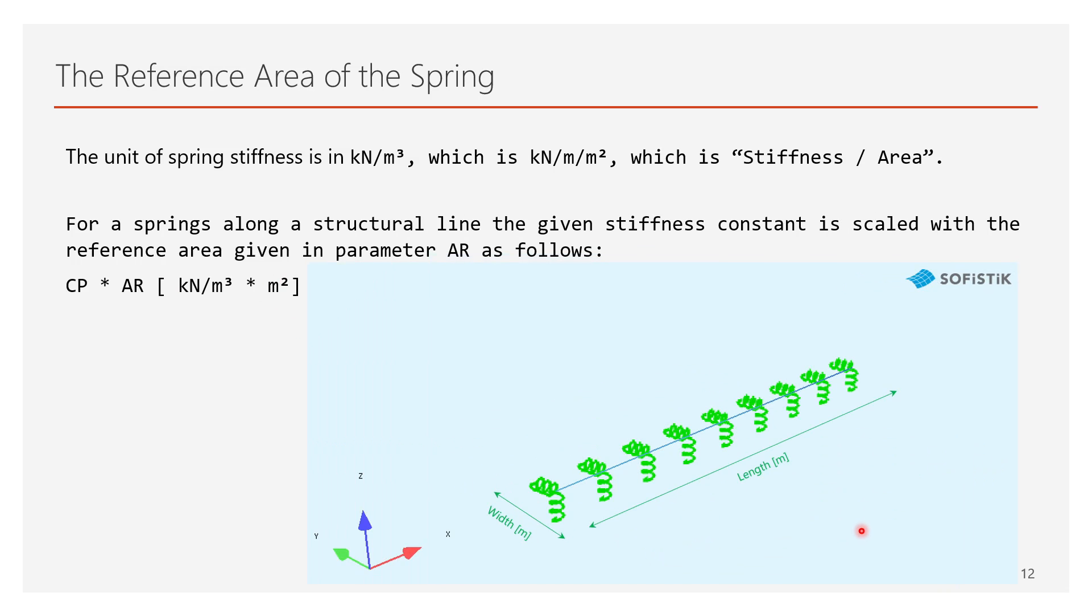For a spring along a structural line, the given stiffness constant is scaled with the reference area given in parameter AR as follows. The meter square equals meter by meter, in which one of the m's is the length, and the other m is the width of the structural line, and the width of the structural line is the width of the support. By default, it is set to one meter, but of course the user can define it with a different value.